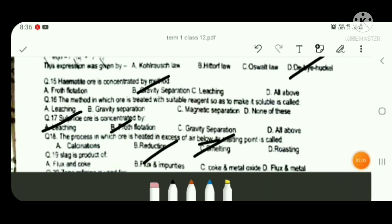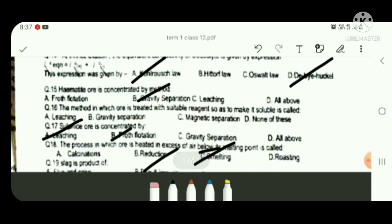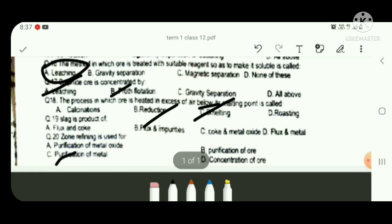the question was infinite dilution. Hematite ore is separated by gravity separation. Next question: the option is leaching. Sulfide ore is concentrated by frost flotation. Next, process in which ore is heated in excess of air below its melting point is called calcination. Slag is a product of flux and impurities.